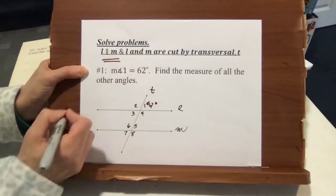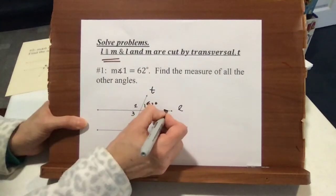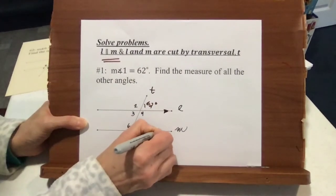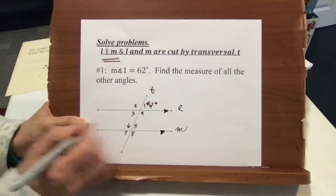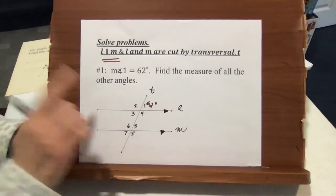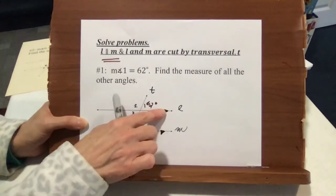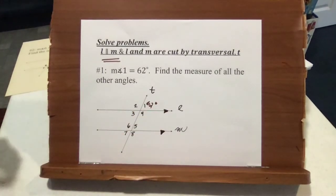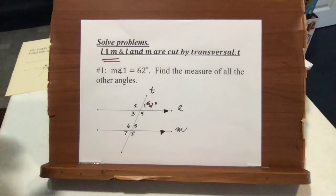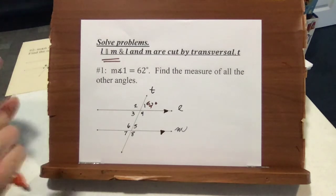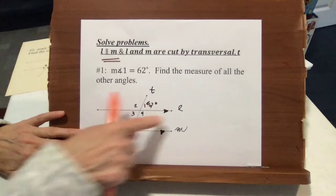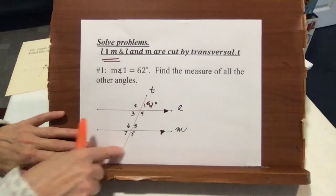Because we know L and M are parallel lines, we're going to mark them as parallel with our little arrow symbol. Remember, the arrows on the end of the line don't mean parallel — these tick marks do. So put them on there. Now, because we know our lines are parallel, we have a relationship between all these angles formed by those lines and this transversal.